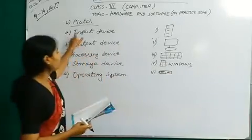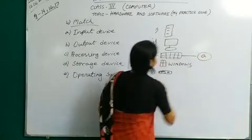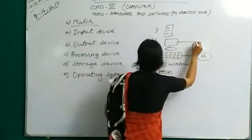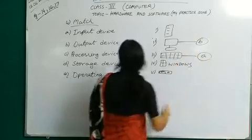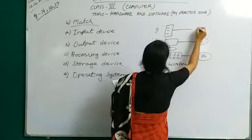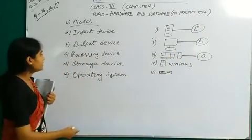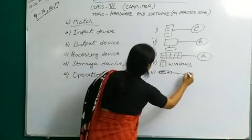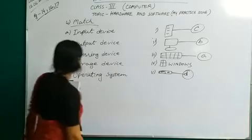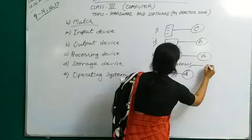Now — input device: the answer is keyboard. Option A — keyboard is an input device. Output device: monitor is an output device, option B. Processing device: this is the CPU — CPU is the processing device, option C. Storage device: pen drive — pen drive is an example of a storage device, option D. Operating system: Windows is an example of an operating system, option E.